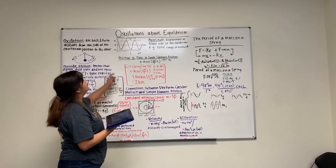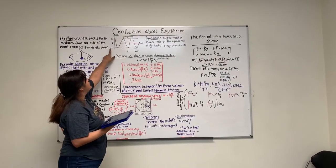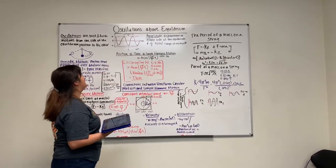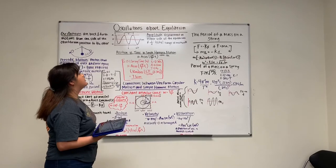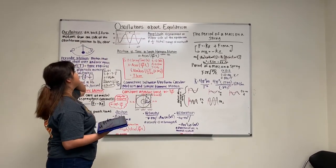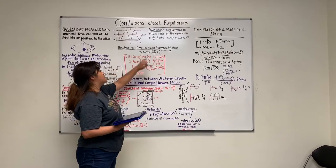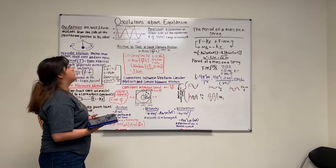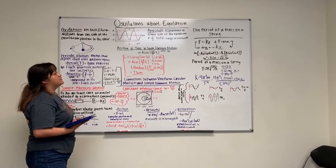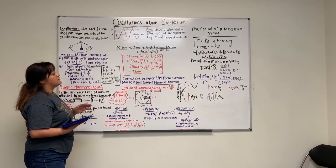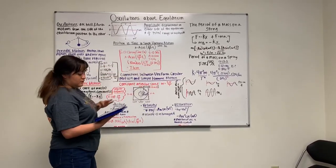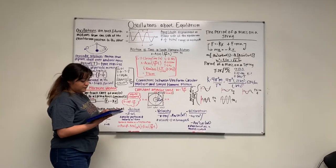It basically goes by the displacement versus time. Here you can see the position versus time in simple harmonic motion, which gives a little more depth. In this case, we have an equation where x equals A cosine of (2π over T) times t. Its unit equals meters.